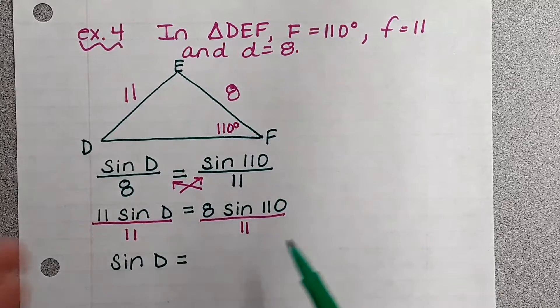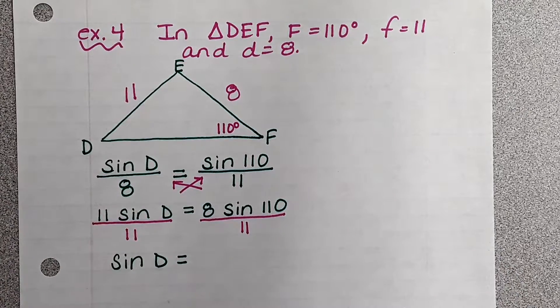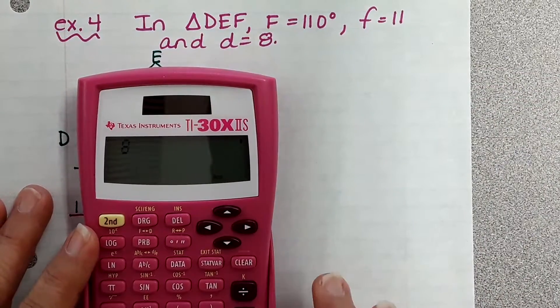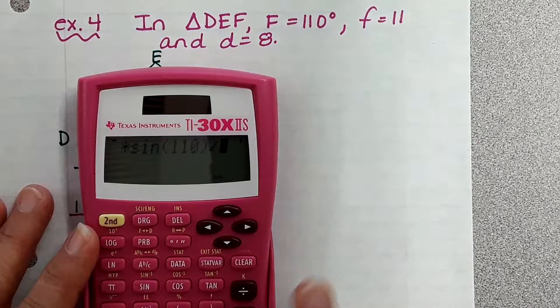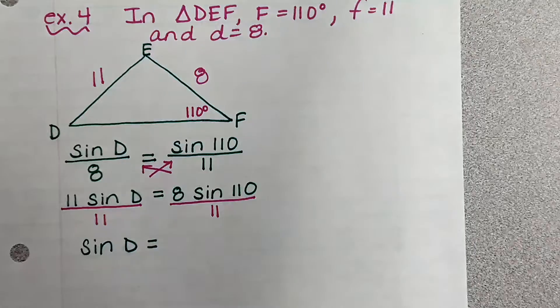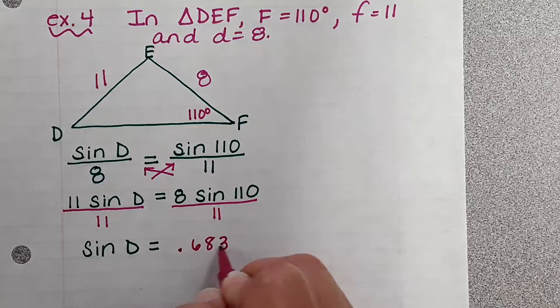Okay, so let's put this in our calculator. Eight times sine of 110 divided by eleven. Did you get 0.6834? Okay, so we're going to write that 0.6834.